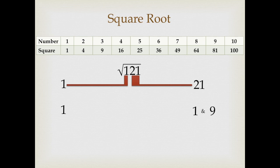Now, on the left hand side, we have found 1 and on the right hand side, we have found 1 and 9. Make the combination of both the numbers. 1, 1, 11 and 1, 9, 19.